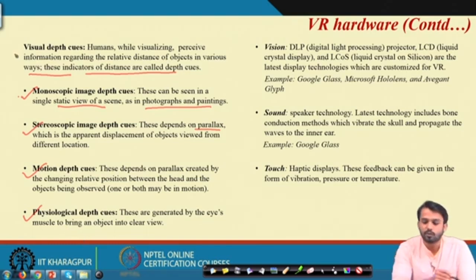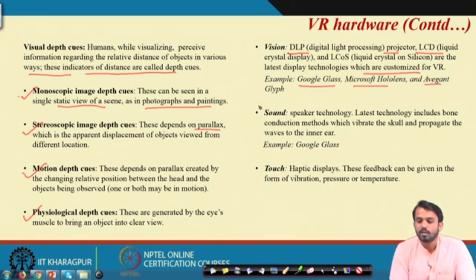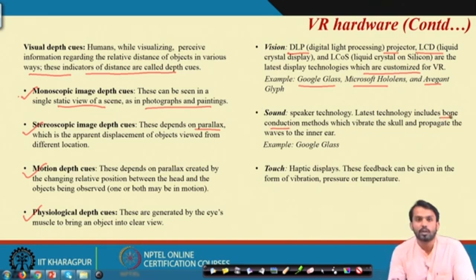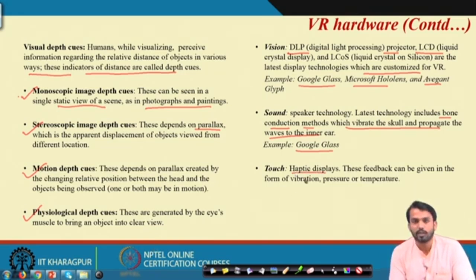Apart from visual depth cues, let us see what vision, sound, and touch technologies are important for VR hardware. For vision, DLP (Digital Light Processing) projectors, LCD (Liquid Crystal Display) projectors, or LCOS (Liquid Crystal on Silicon) display techniques are used, customized for VR. Examples include Google Glass, Microsoft HoloLens, and Glyph. For sound, bone conduction is a major breakthrough in VR research — it vibrates the skull and propagates waves into the inner ear, and Google Glass is used for this. For touch, 6 or 8 degree-of-freedom haptic devices are used, providing feedback in the form of vibration, pressure, or temperature.